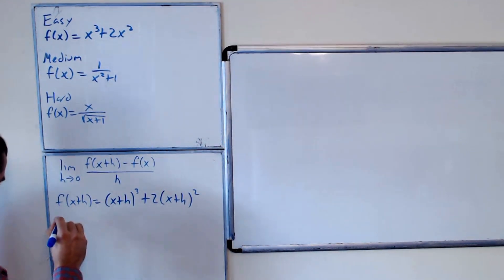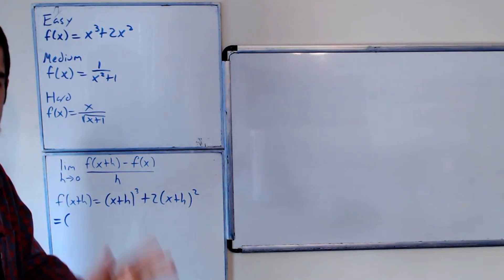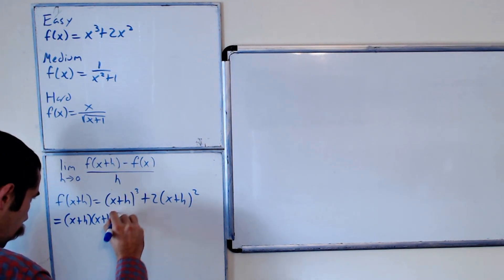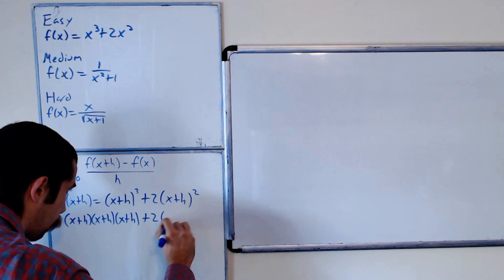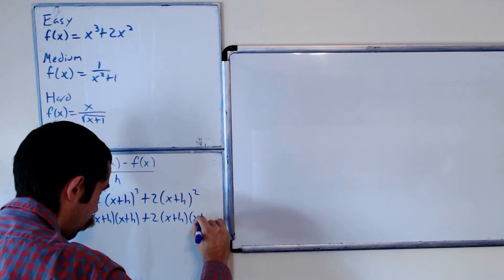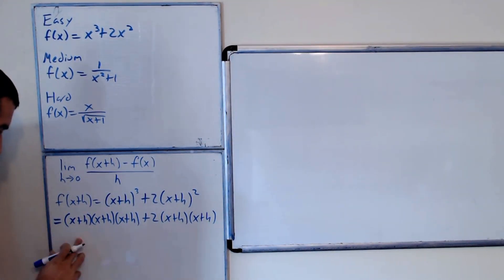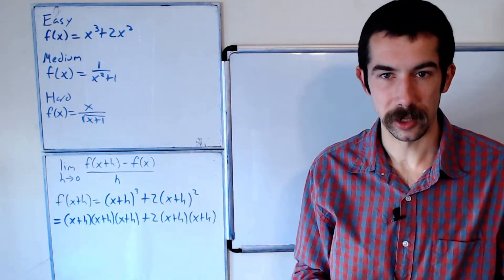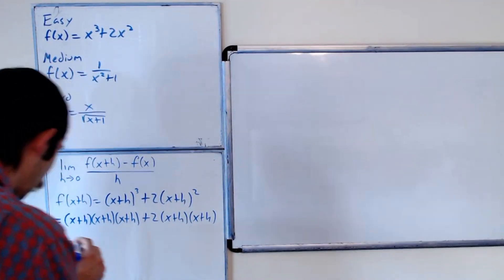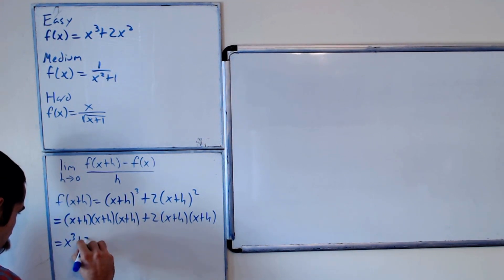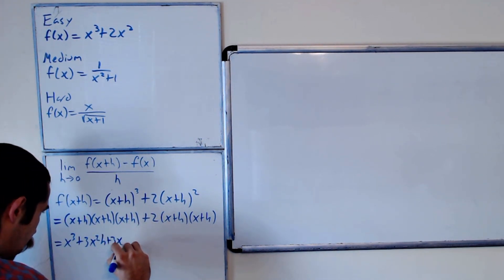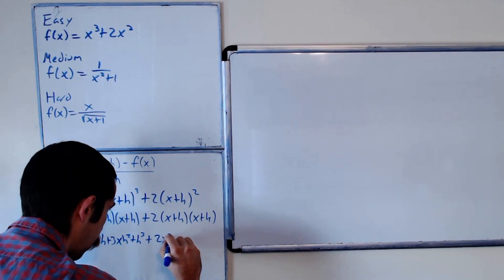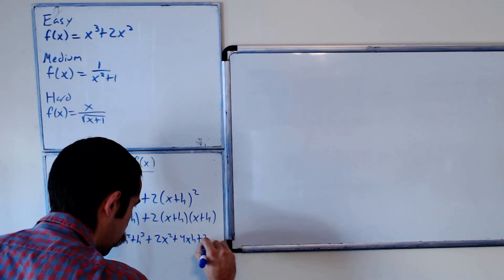What's (x+h)³? It's (x+h)(x+h)(x+h). You could work this out using FOIL twice, distributing all the terms, or you could read off the coefficients using Pascal's triangle. This works out to be x³ + 3x²h + 3xh² + h³. And 2(x+h)² is 2x² + 4xh + 2h².